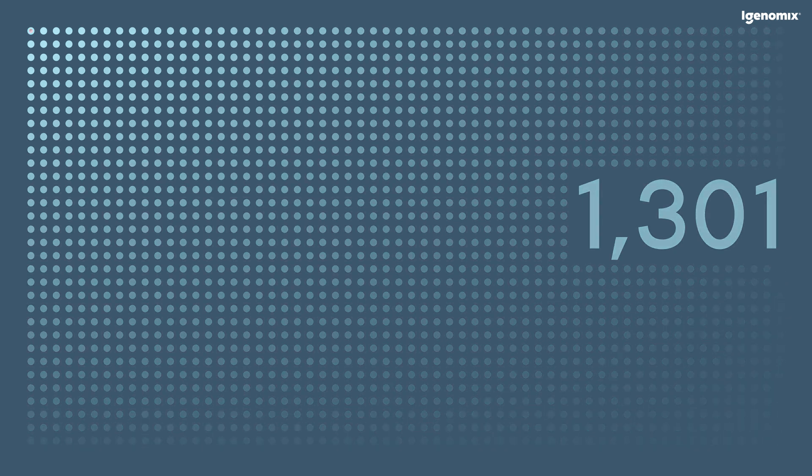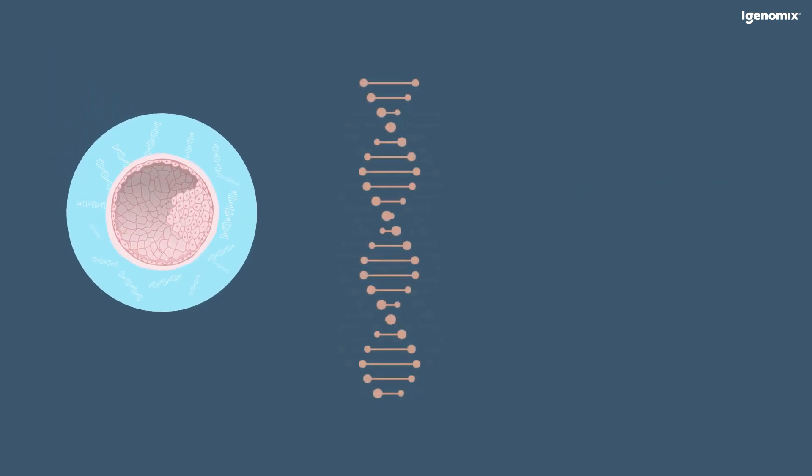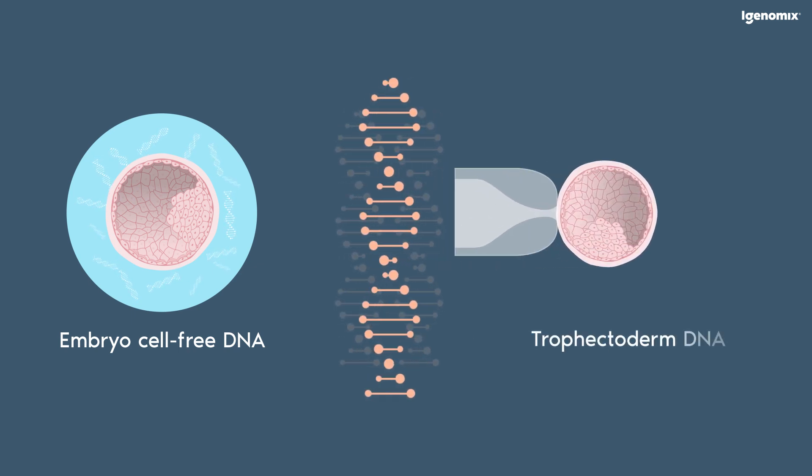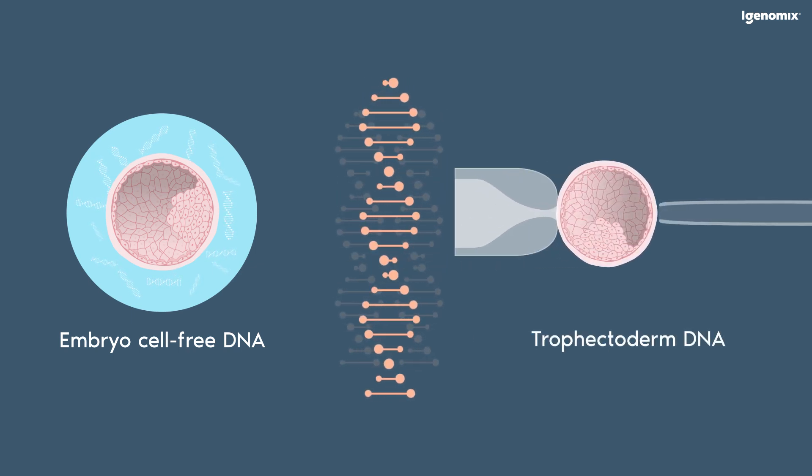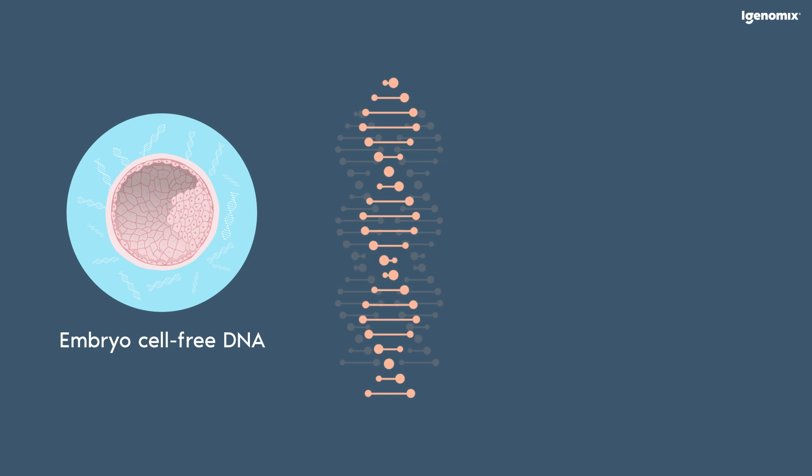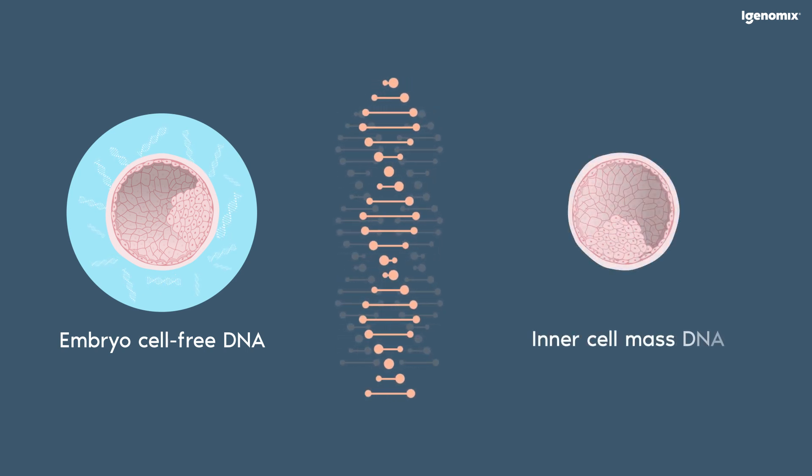The study was designed with two main objectives. To evaluate the concordance and reproducibility of testing embryo cell-free DNA versus trophectoderm DNA obtained from the same embryo in a large sample of 1,301 day 6 and day 7 human blastocysts, and to assess the concordance rates with the inner cell mass of the blastocyst in a subset of 81 aneuploid blastocysts donated for research.